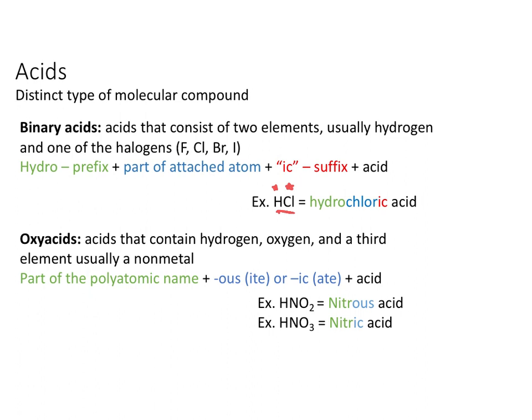Then we add 'acid,' so HCl is going to be hydrochloric acid. Now we learned earlier that this would be hydrogen monochloride, however we don't actually ever call it that in day-to-day chemistry. Hydrochloric acid is how this would be referred to. Something like HI would be hydroiodic acid. That's the nomenclature procedure for binary acids — you're looking for hydrogen directly attached to one of your halogens.